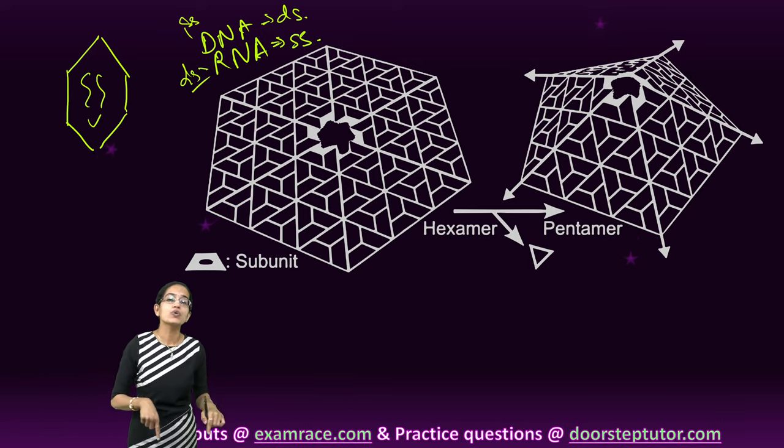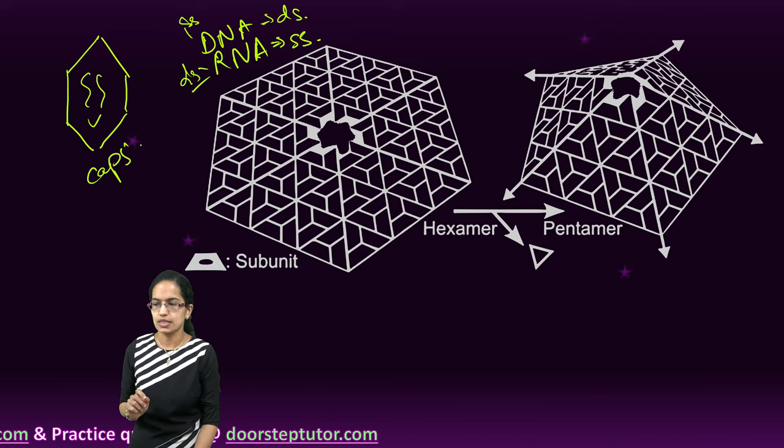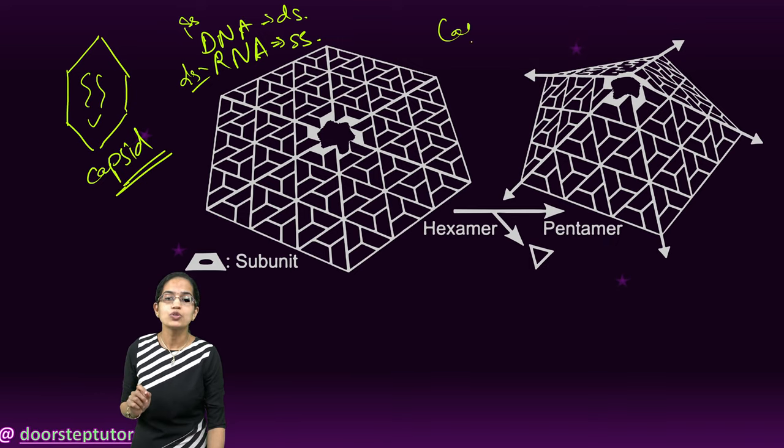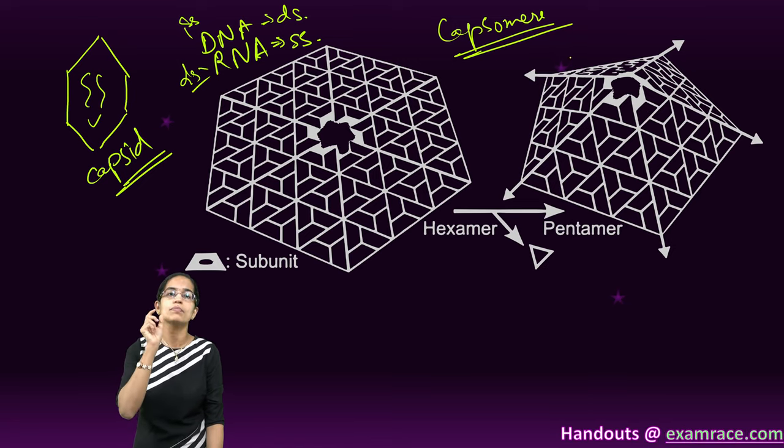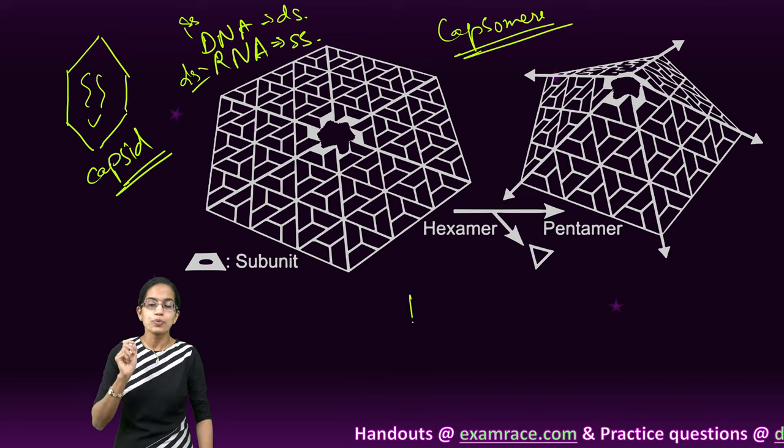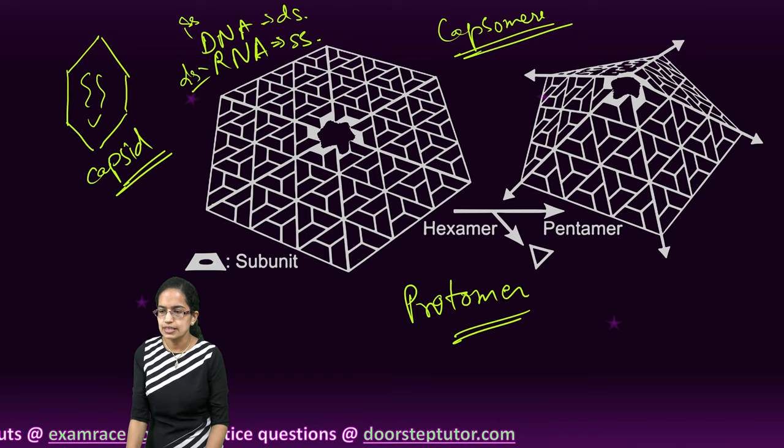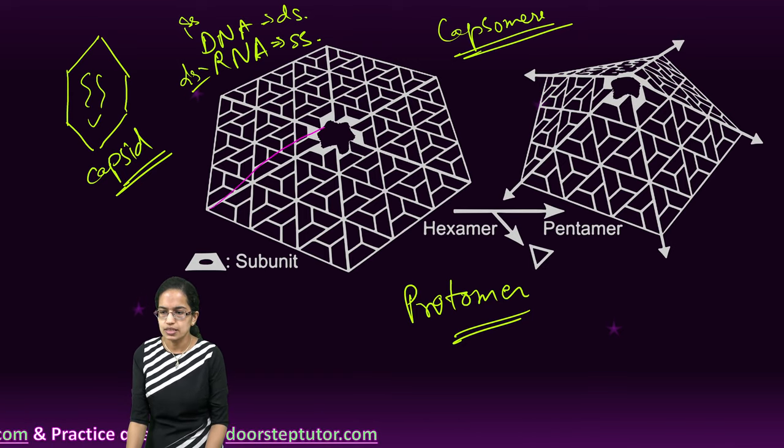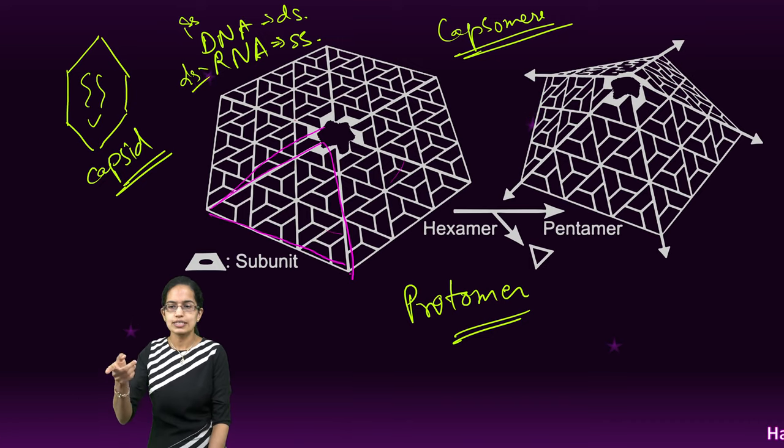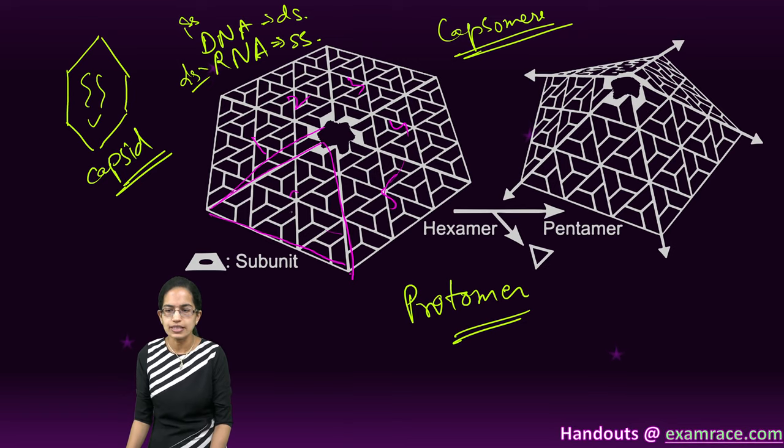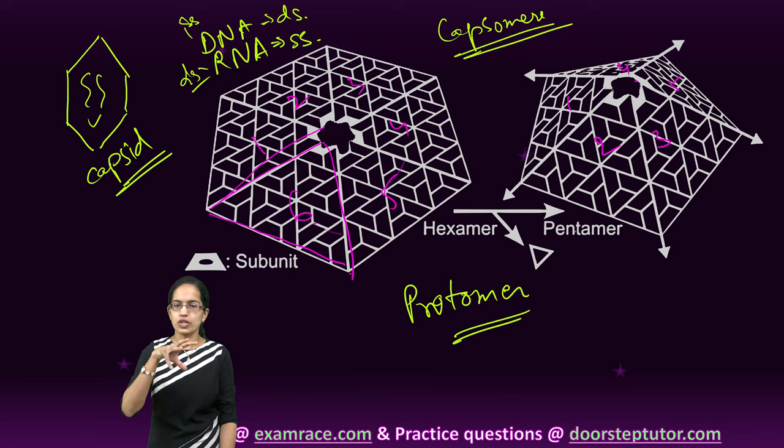Then we have the outer protein layer. This outer protein layer is what is called the capsid. This capsid is made up of capsomeres, and capsomeres are further made up of smaller monomer protein units which are known as protomers. Here in this diagram we have an example of a protomer. What happens is this triangle, this one triangle, is one subunit. In this case, this is a hexamer. There are one, two, three, four, five, and six subunits that are there, and here there are five subunits that are there and therefore it is a pentamer.